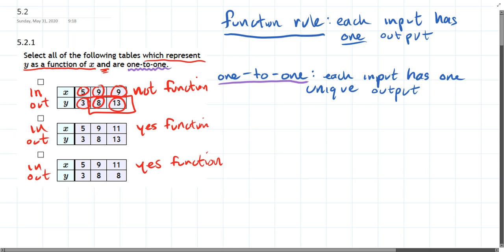One-to-one means the outputs are unique. So this is not going to be a function, but the outputs are unique. But it's already failed to be a function, so the first one's out. All right, the second one, we see three, eight, thirteen. They're all unique. There's no repeated values. So this one is yes, it's one-to-one. And I'm going to be lazy and write one-to-one as one-dash-one.